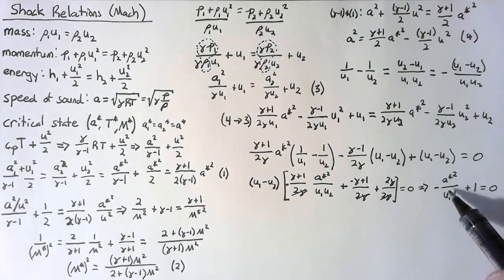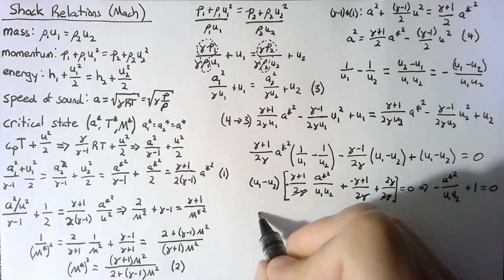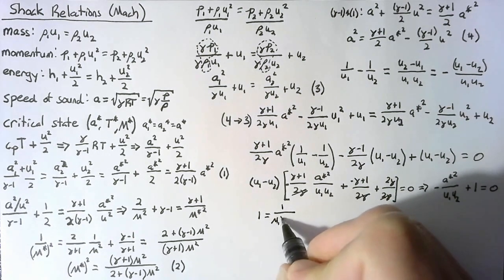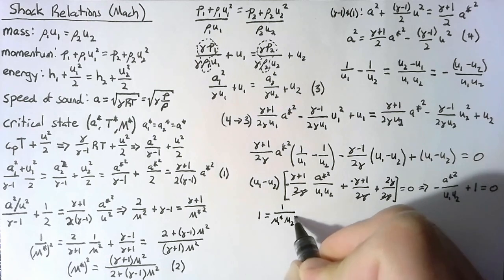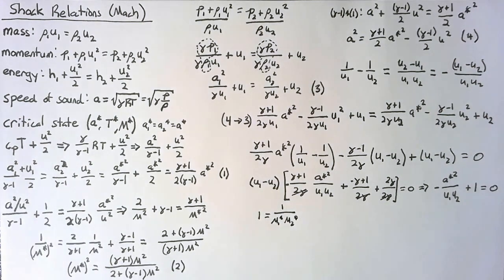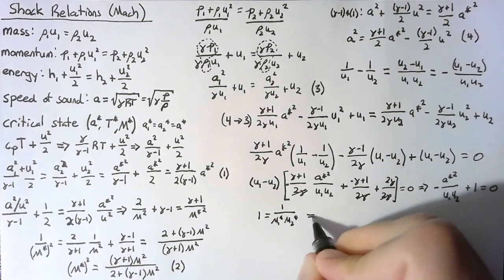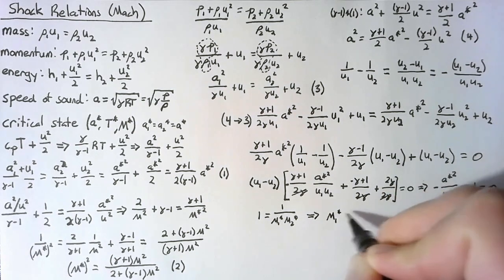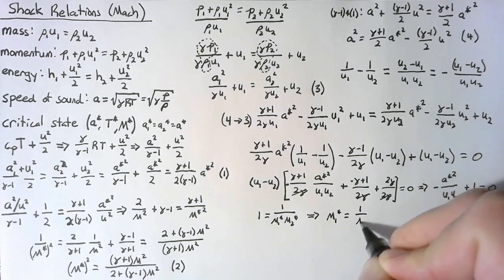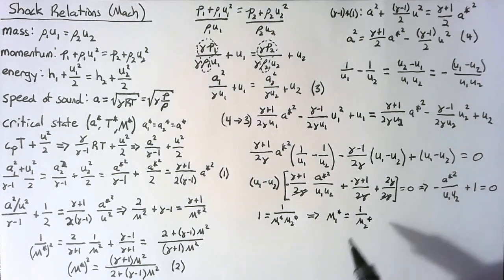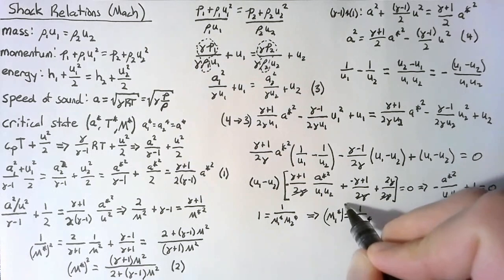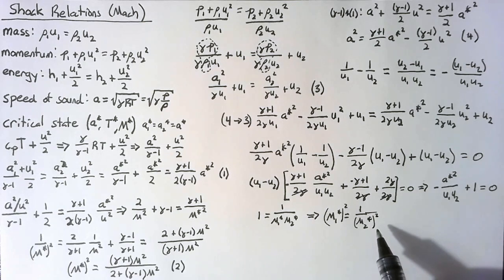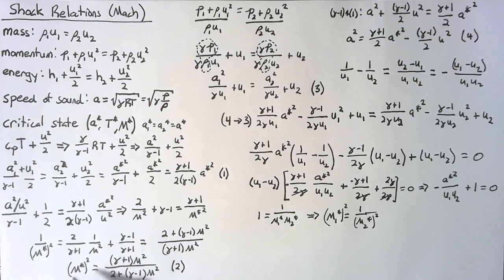This gives us the key result: 1 equals 1/(M₁*·M₂*), which means M₁* equals 1/M₂*. Squaring both sides gives us something we can substitute directly using Equation 2.